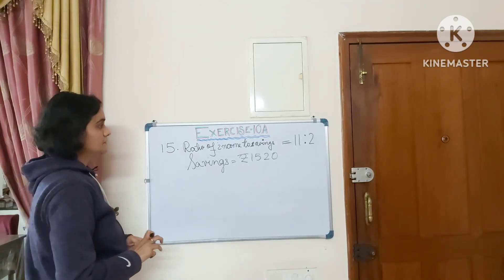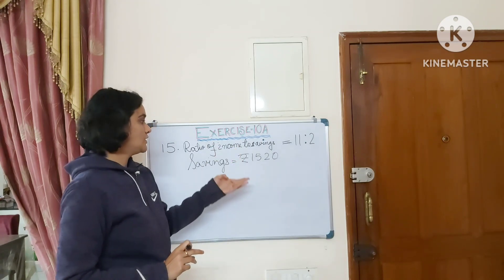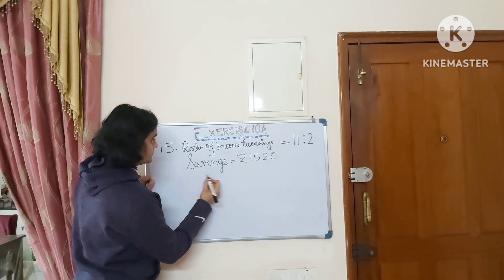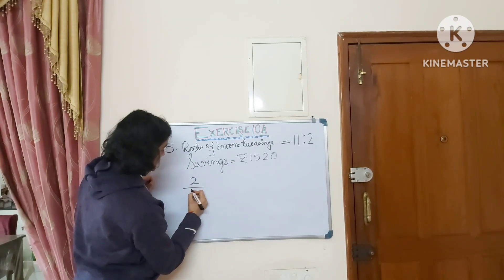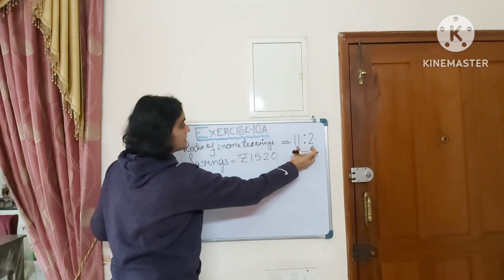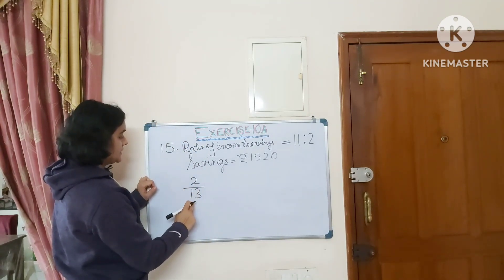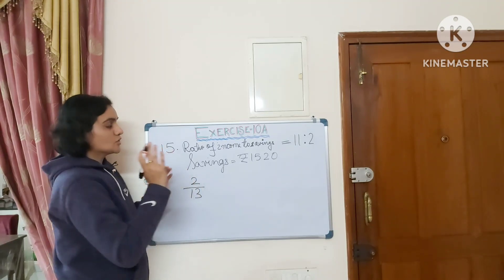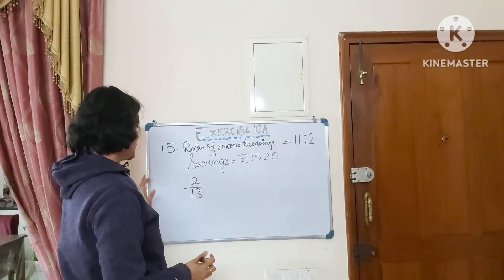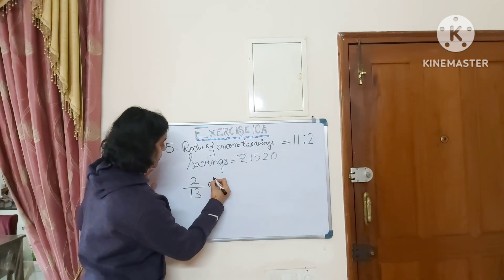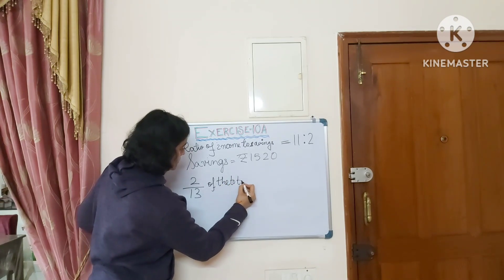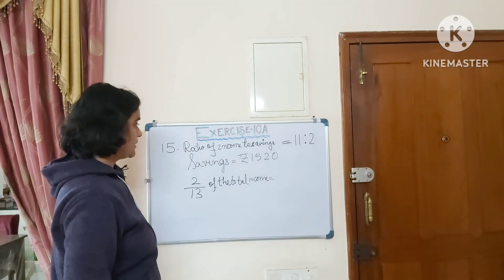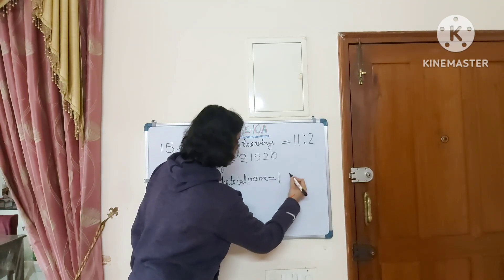First we find the total income. The sum of the ratio parts is 11 plus 2 equals 13. So 2 out of 13 of the total income goes to savings. Therefore, 2 by 13 of total income equals the savings amount of Rs. 1520.